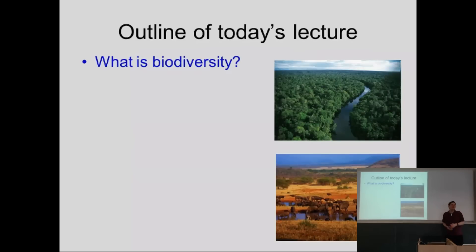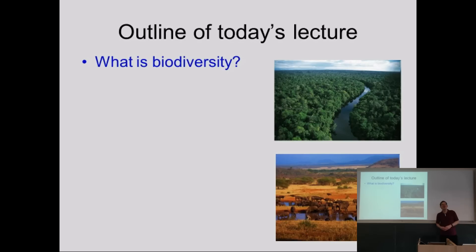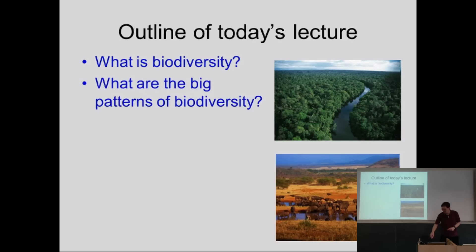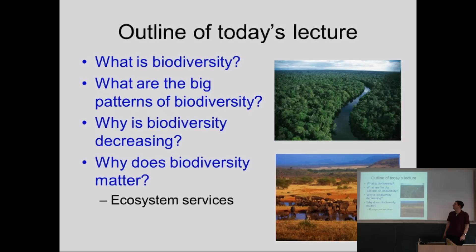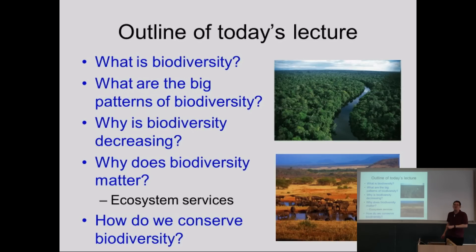What I'm going to do today is to briefly define what biodiversity is, which some of you will know. After we've defined what biodiversity is, I'm going to talk about where it is globally, and why it's decreasing, and why that's a problem. That links to this idea of ecosystem services. And finally, an extremely brief overview of how one might conserve biodiversity.